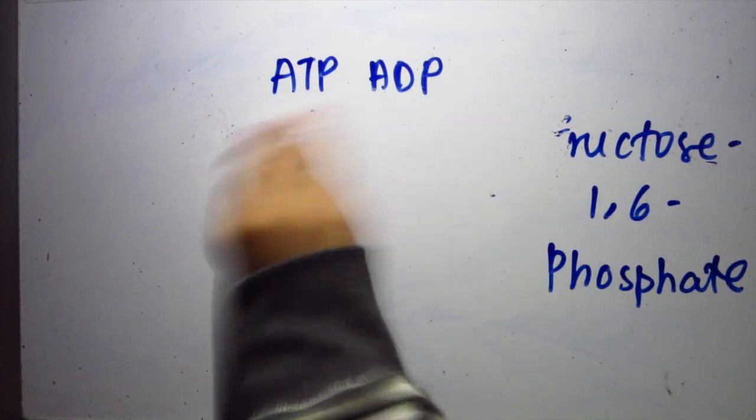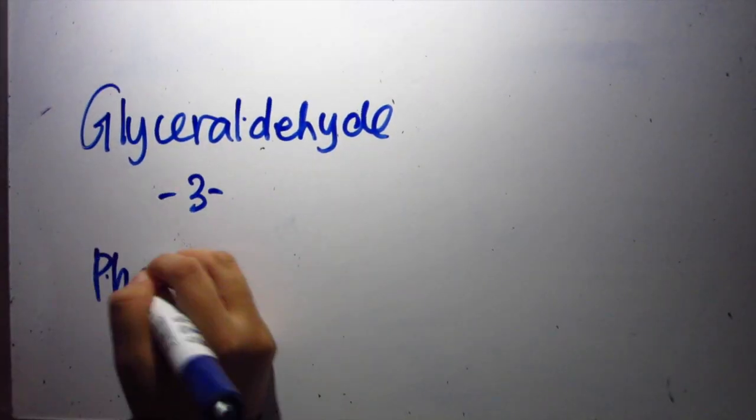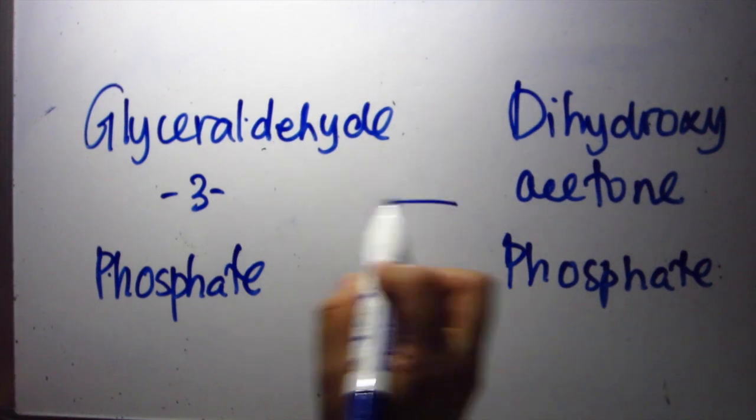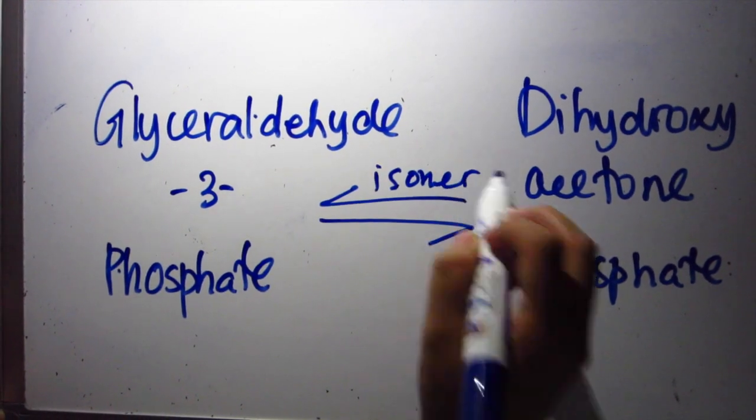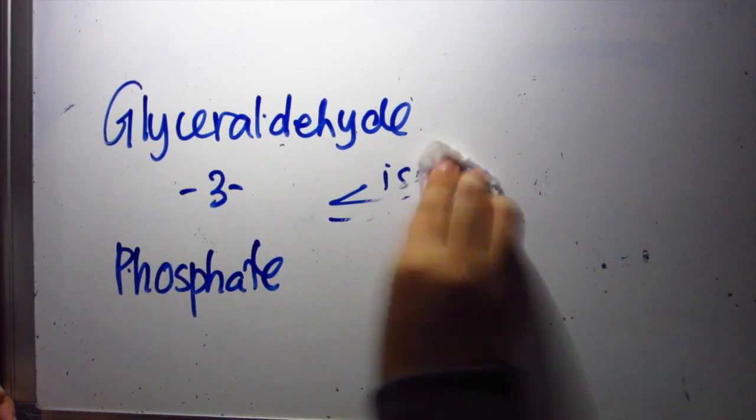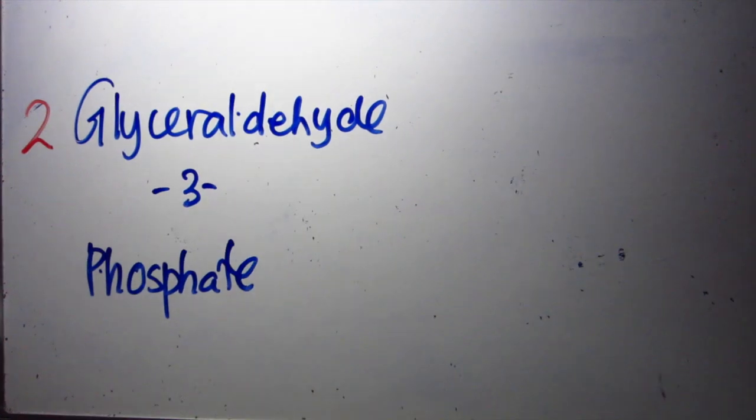The next step is cleaving. G3P and DHAP - these are the molecules produced. But we need G3P, DHAP isomerizes. The rest of it is time to do.